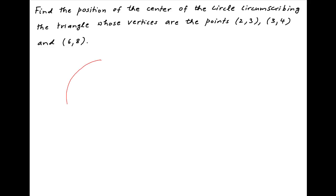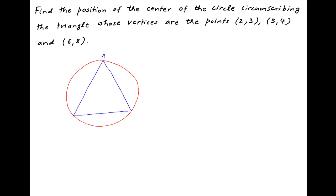We are looking for a circle which circumscribes a given triangle with vertices at the points 2,3 — let's denote it by A — 3,4 — let's denote it by B — and 6,8 — let's denote it by C.